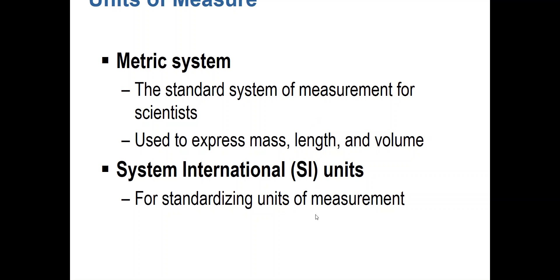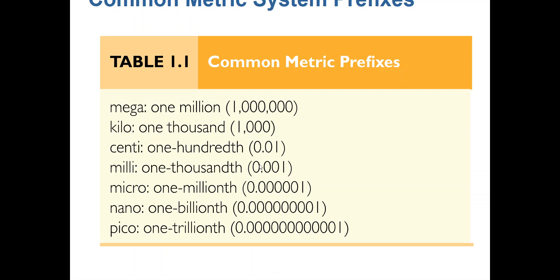If we need to convert things within the metric system, we can simply move a decimal place. Here are examples of metric prefixes — things such as mega, kilo, centi, milli, micro, and so forth. This just notes the decimal place within the unit. A mega prefix denotes a million, kilo is a thousand, centi is one hundredth. Any time we have a metric unit of measurement, there's a prefix that precedes it, giving you an indication of the size of the unit.